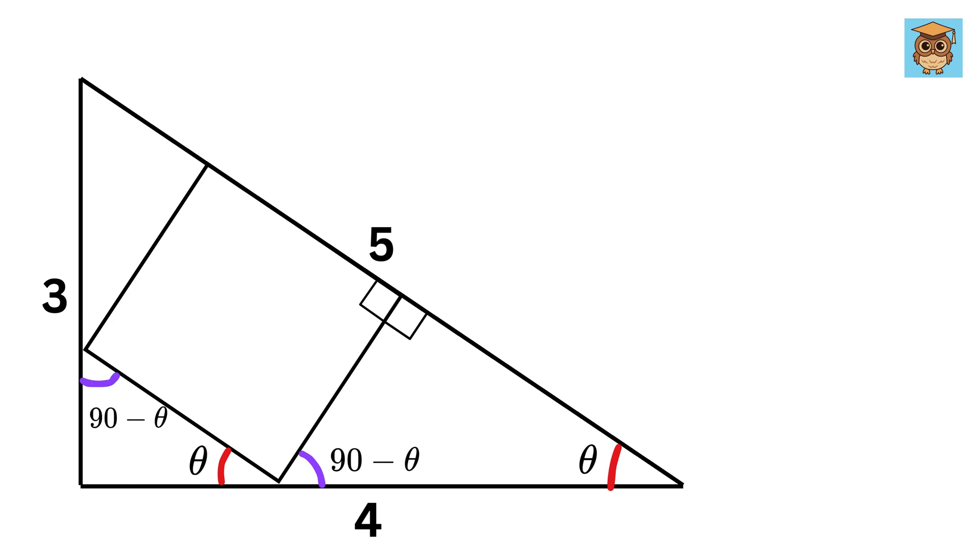Now this is 90 minus theta. Also, this is 90 degrees, so what will be this angle? It will be theta. And finally, since this is angle 90 degrees, therefore this angle will be 90 minus theta. Amazing!